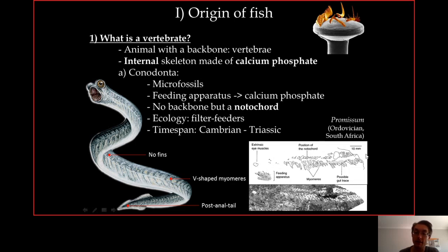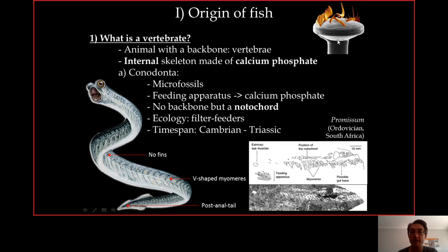The conodont from the Ordovician of South Africa is probably the closest thing to an almost-vertebrate — it has a notochord but no backbone yet, making it the sister group of vertebrates. It has no fins and no lower jaw, just a hole for a mouth, so these animals were filter feeders. They are found from the Cambrian to the Triassic, co-evolving with vertebrates for a long time.